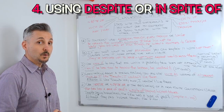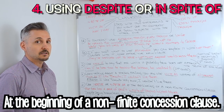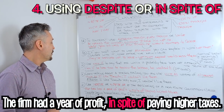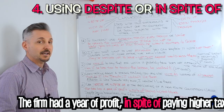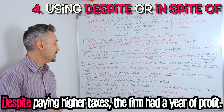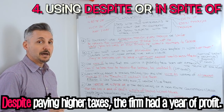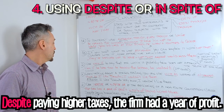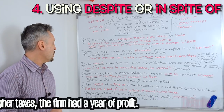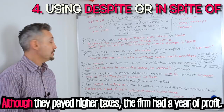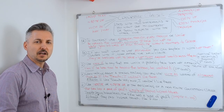Use 'despite' and 'in spite of' at the beginning of a non-finite concessive clause. Just like my example: The firm had a year of profit, in spite of paying higher taxes. I could have said: Despite paying higher taxes, the firm had a year of profit. Remember that 'despite' takes an -ing verb — so, despite paying higher taxes, and so on. I could have also said: Although they paid higher taxes, the firm had a year of profit.